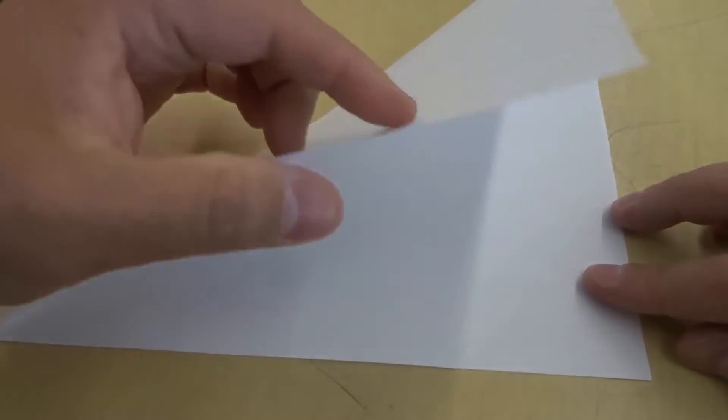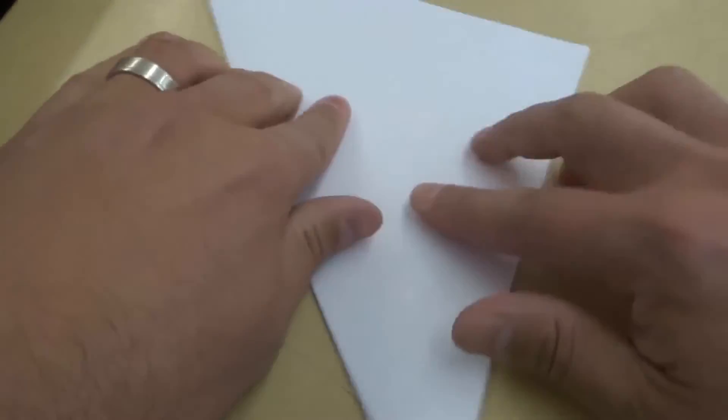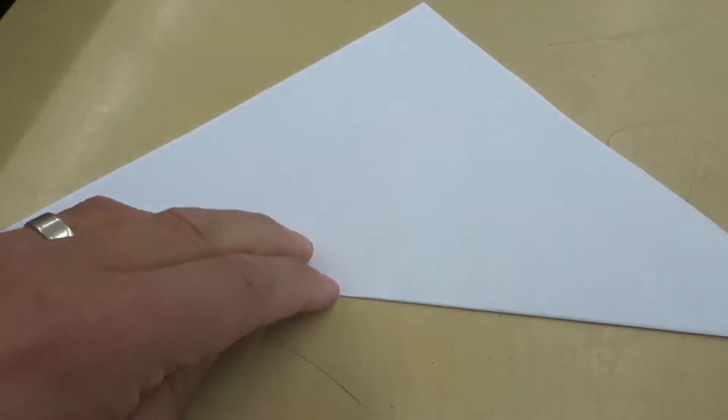You want to fold it from corner to corner. So I'm folding it like this to make a triangle from corner to corner. Put a nice crease in it and then turn it so that the triangle is pointed upwards like that.